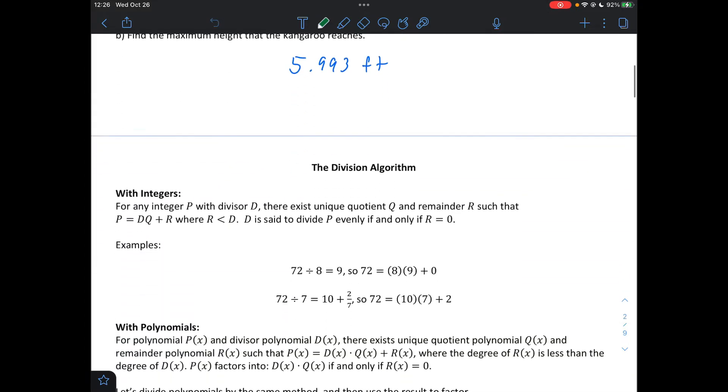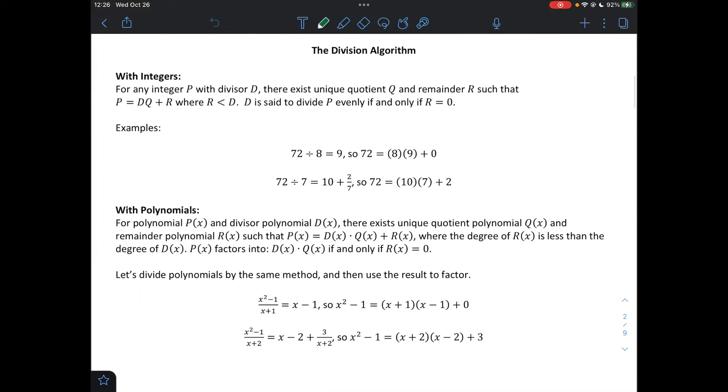Let's take a look at the division algorithm for integers and also for polynomials. So for integers, we did 72 divided by 8, that's exactly 9. So we can say 72 equals 8 times 9 plus a remainder of 0. Well, if we did 72 divided by 7, we could say that it would be 10 with a leftover 2, right? So we can say that 72 equals 10 times 7 plus 2.